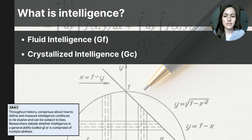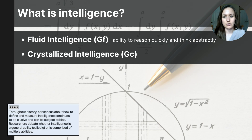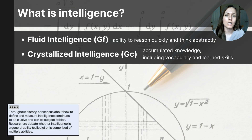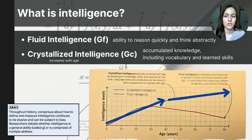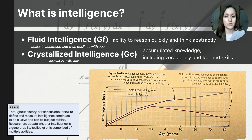Fluid intelligence refers to our ability to reason quickly and think abstractly, like solving new puzzles or overcoming unfamiliar challenges. Crystallized intelligence represented our accumulated knowledge, including our vocabulary and learned skills. Longitudinal studies have shown that crystallized intelligence actually improves with age, while fluid intelligence peaks in early adulthood and then begins to decline as we age. Both of these factors play a key role in our mental abilities.